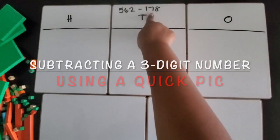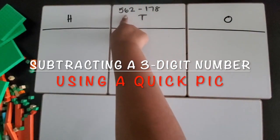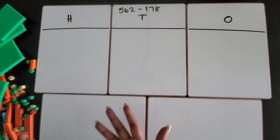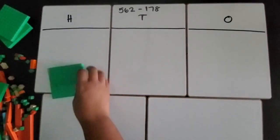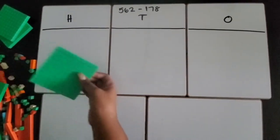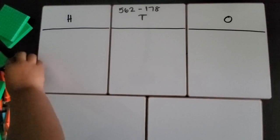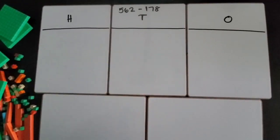We are going to subtract one 3-digit number from another 3-digit number using quick pics of base 10 blocks. If you do not have access to these base 10 blocks of your own, you can always draw a quick picture.